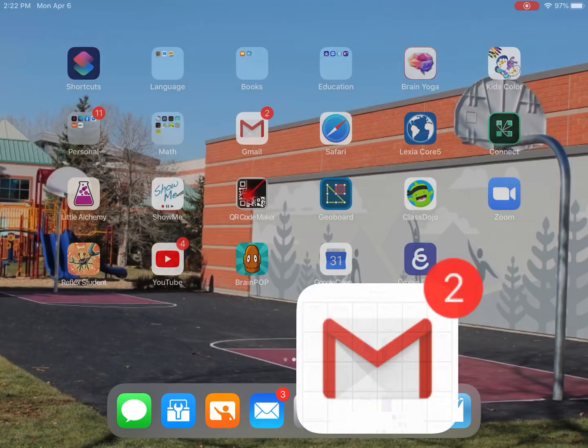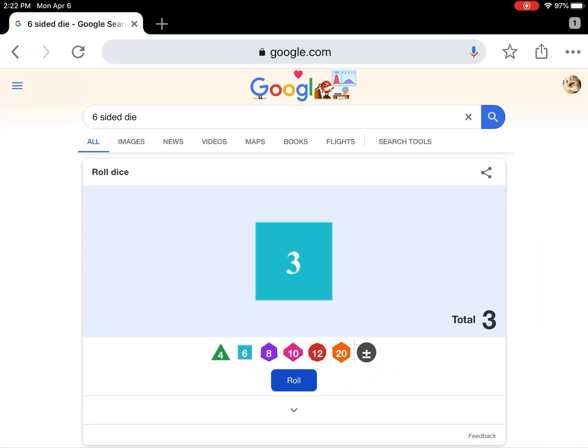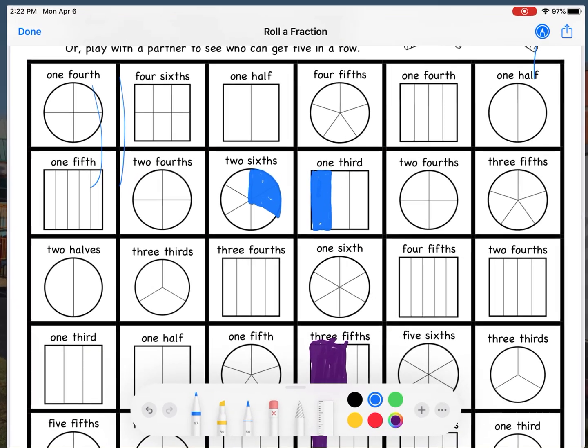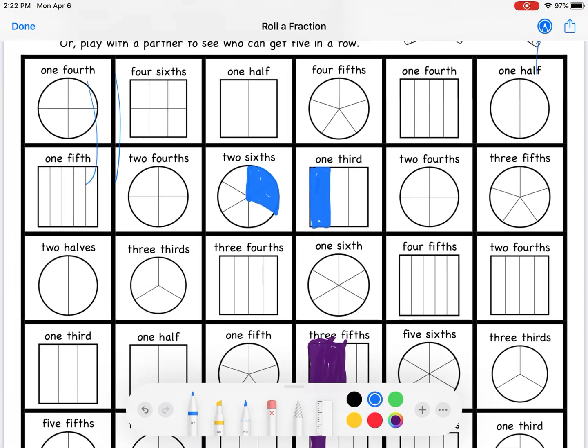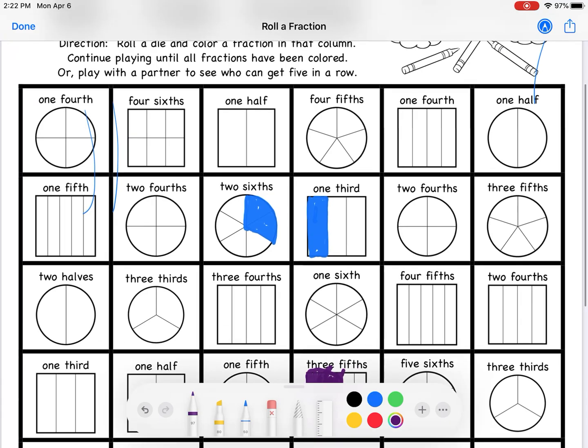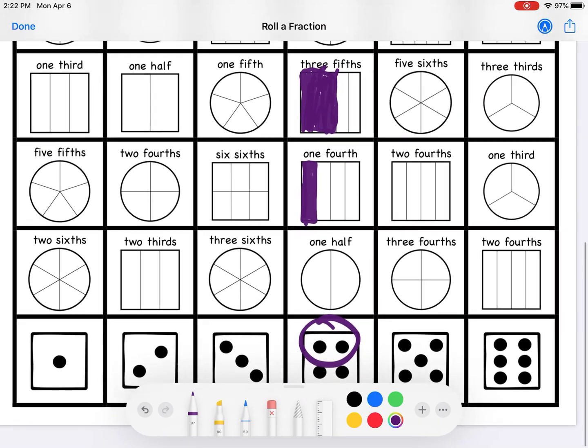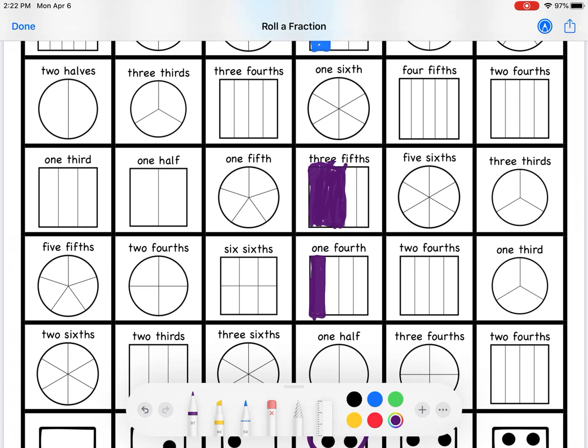Okay my turn. So you can see how if you have an actual die in real life it's probably a lot easier because then you don't have to go back and forth. I got a five. So that's that column there. I'm going to go for five-sixths here.